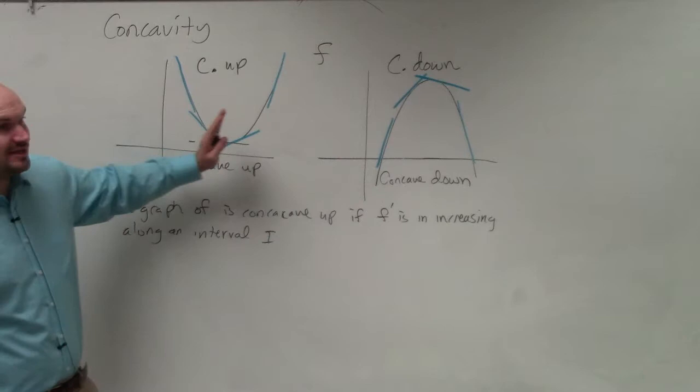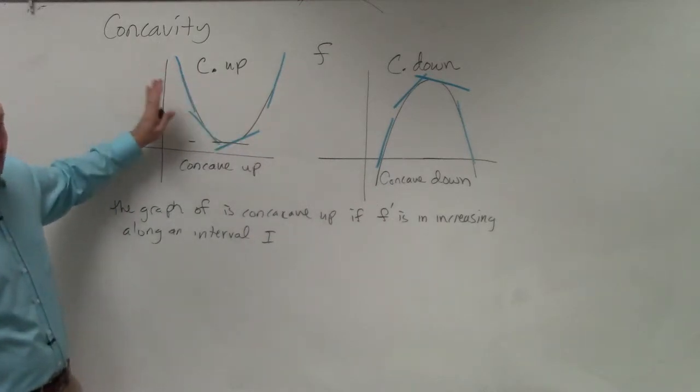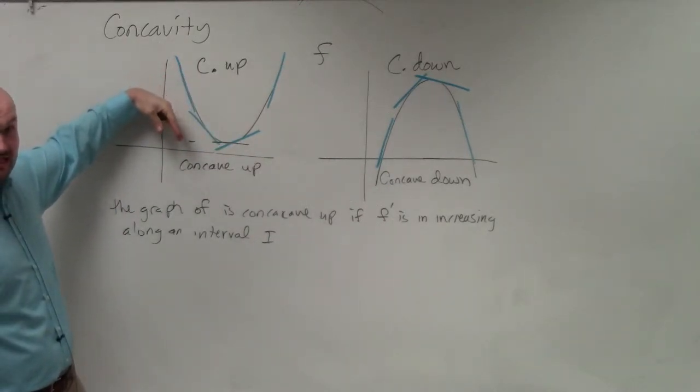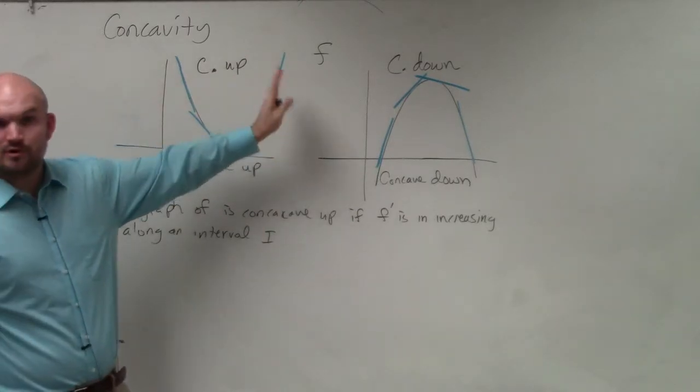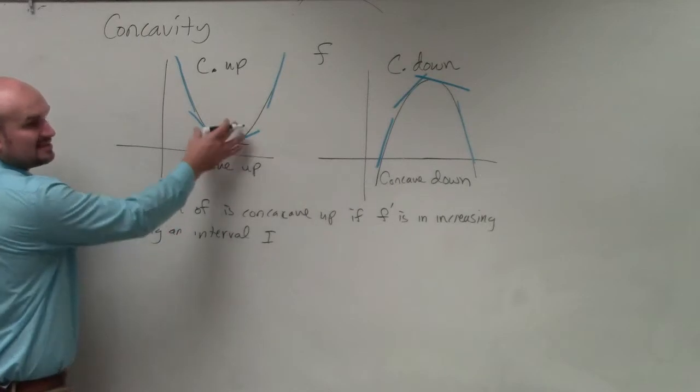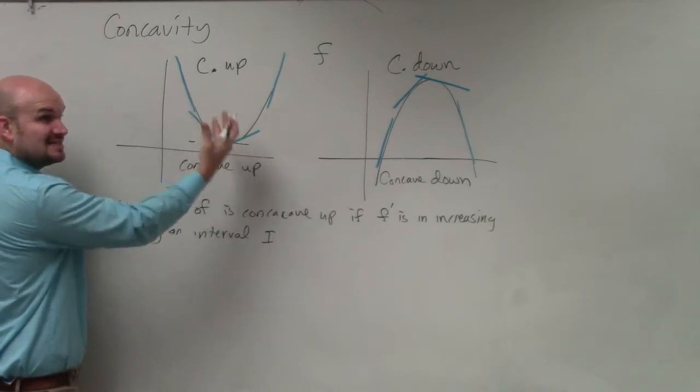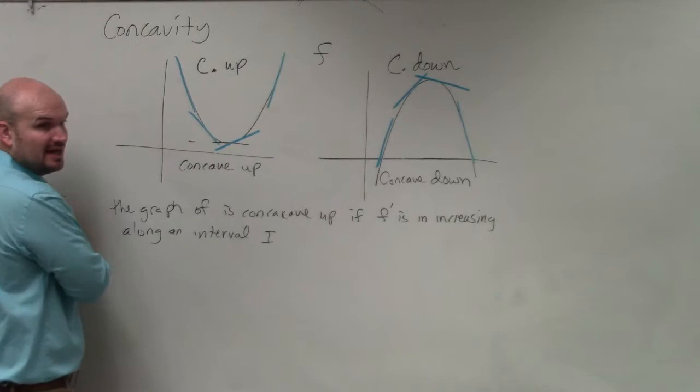And then it's continually increasing. So you can look at the slope. Do you see how the slopes, even though they're negative, are getting less and less negative, until they get to zero, and then more and more positive? So you could say this slope is increasing. And since the slope is increasing, we know that something is concave up.